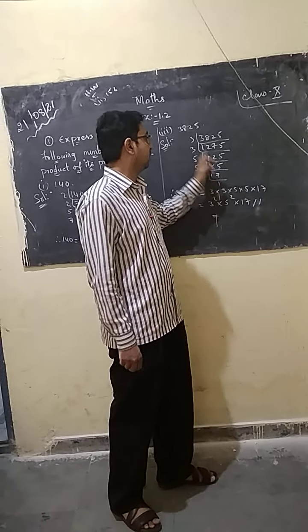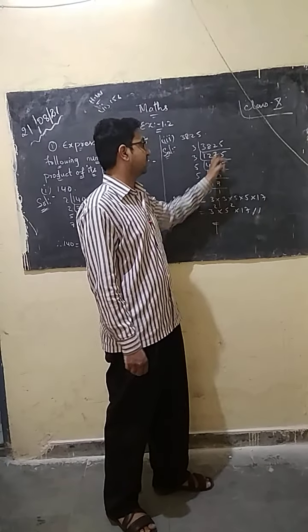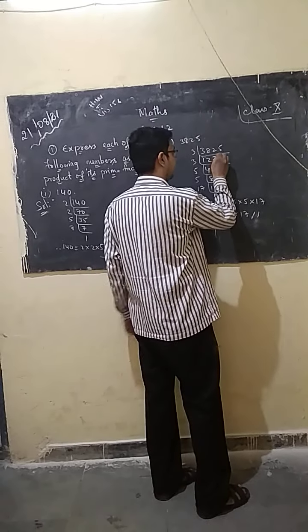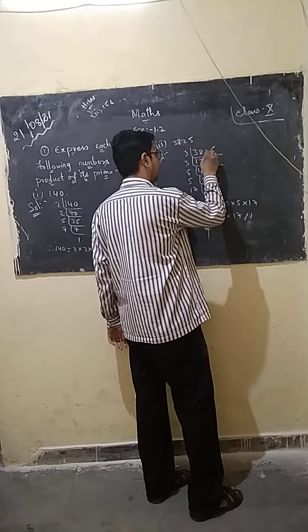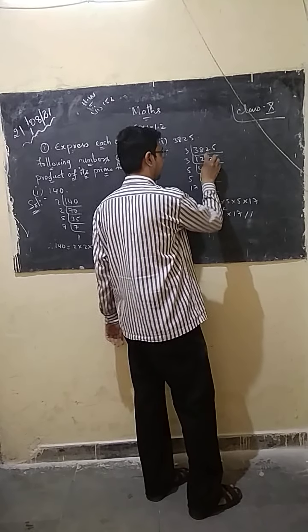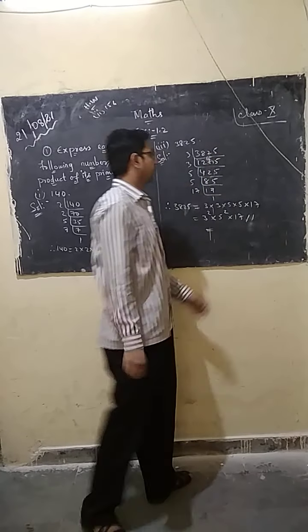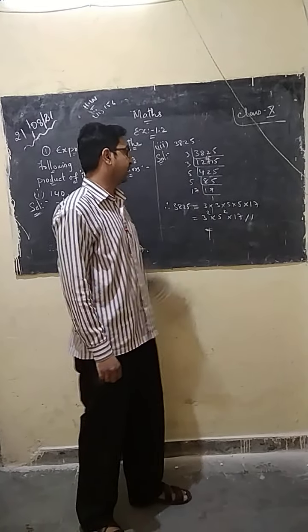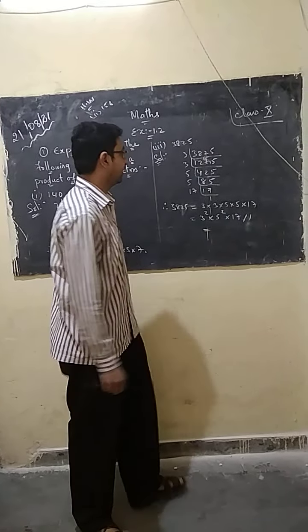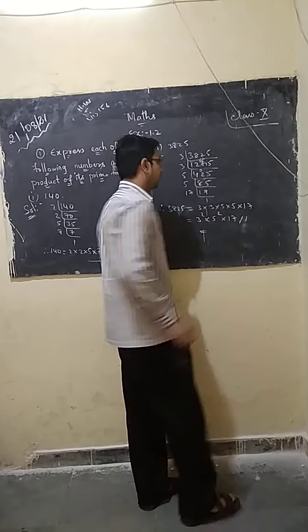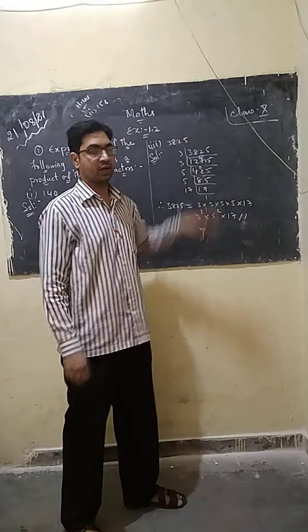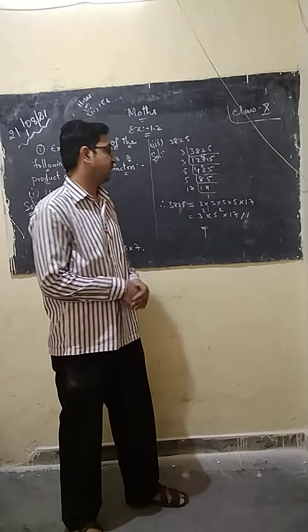Since 3825 is divisible by 3, we divide: 3825 divided by 3 gives 1275. Is 1275 also divisible by 3? Yes it is, so we divide again: 1275 divided by 3 gives 425. Now 425 is divisible by 5.